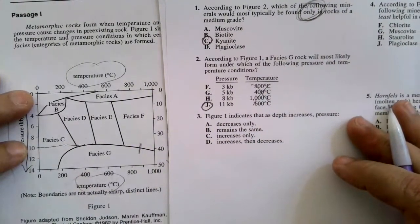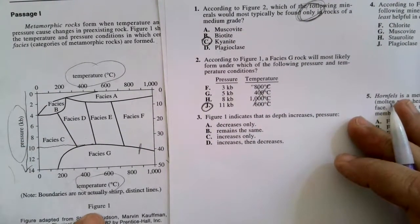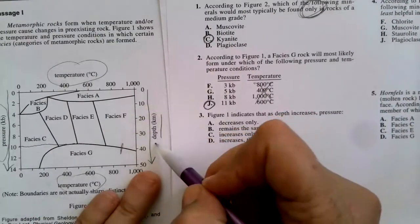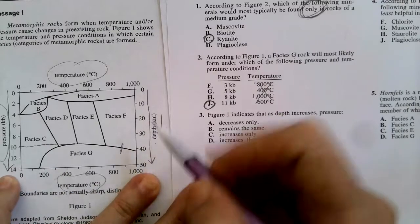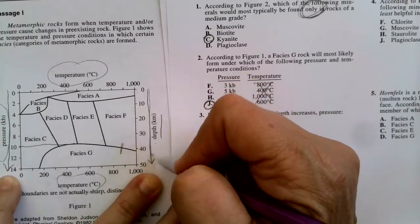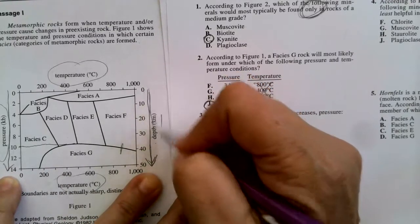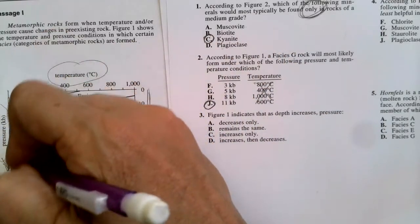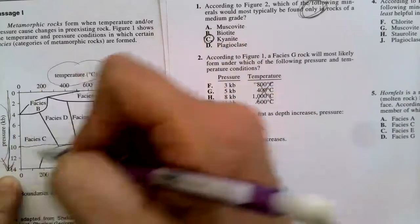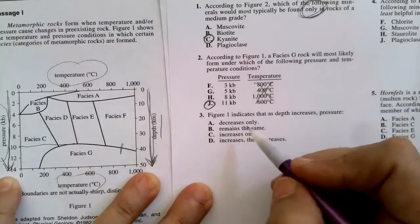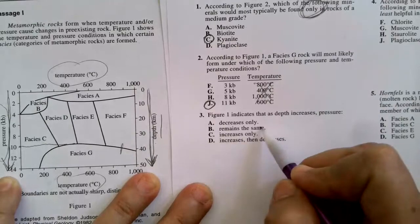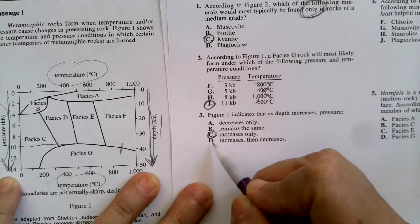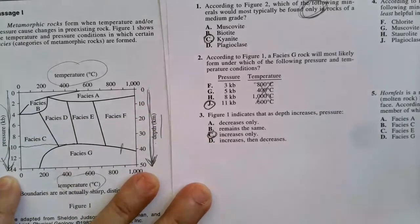Number three. Figure one, same one again, indicates that as depth increases, so looking at depth, pressure does what? So depth increases by going down, so what happens when pressure, when we read the scale down, it also is increasing. The numbers are going up in both cases. Decreases only? No. Remains the same? No. Increases only? Yes. Increases then decreases? No, it doesn't do that. It only increases.